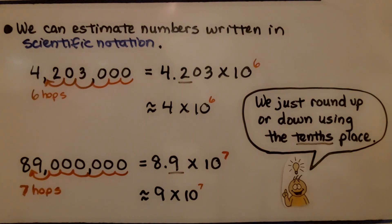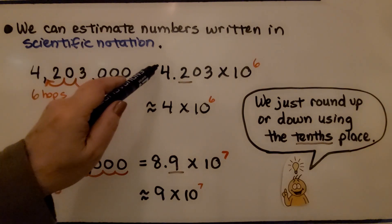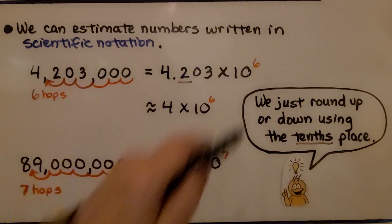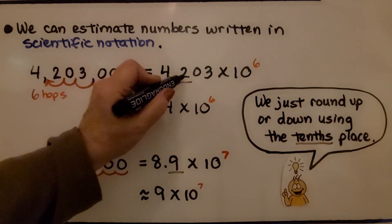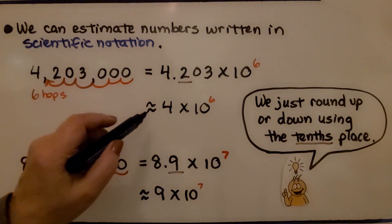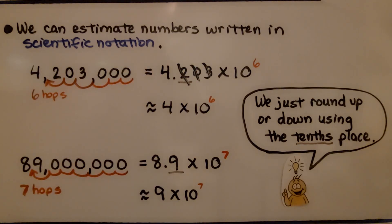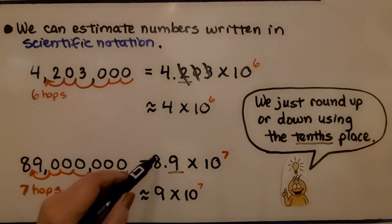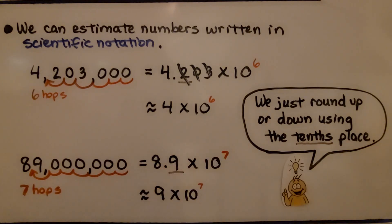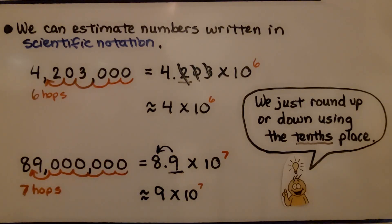We can estimate numbers written in scientific notation. Here we have 4,203,000, which equals 4.203 times 10 raised to the sixth power. Since the 2 tells the 4 to stay the same when rounding, we can estimate this as approximately 4 times 10 to the sixth power. Here we have 89 million, written as 8.9 times 10 raised to the seventh power. Since 9 is 5 or greater, it tells the 8 to round up to a 9 — so it's approximately 9 times 10 raised to the seventh power.